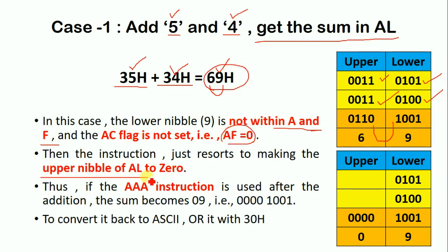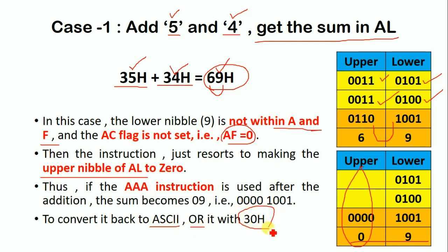When this condition is met, the AAA instruction makes the upper nibble of the AL register 0, so 69H becomes 09H. After that, to convert it back to ASCII code, we perform an OR operation with the hexadecimal value 30H — that is, 09H OR 30H — so that we get the correct ASCII value.